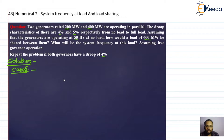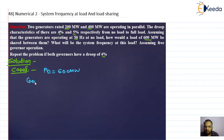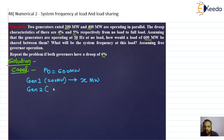We have two generators. The total power demand is 600 megawatt. We need to find the share of generator one and generator two — how much of this 600 megawatt will be taken by each generator according to their droop characteristics. Let us consider generator one, rated 200 megawatt, will take a load of x megawatt. Accordingly, the load on generator two will be 600 minus x megawatt, since it can take a maximum of 400 megawatt.